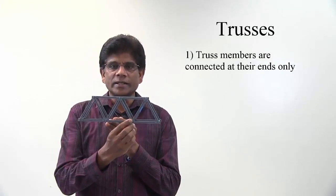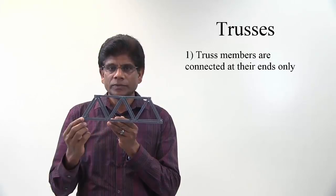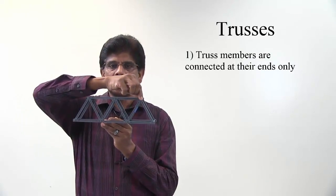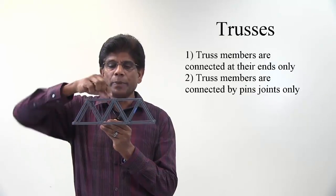Truss members are connected at their ends only. You can see this in this bridge. They are all connected at the end point. Truss members are connected by pin joints only.